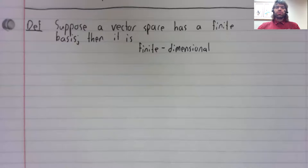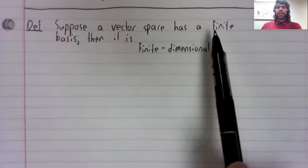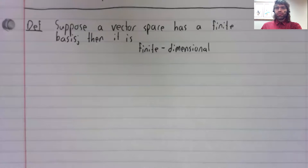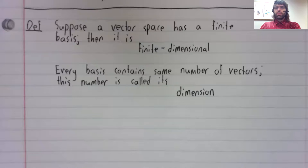Suppose a vector space has a finite basis. Then it is finite dimensional. Now, if it has a finite basis, then every basis contains the same number of vectors. The number of vectors in a basis is called the dimension of the vector space.